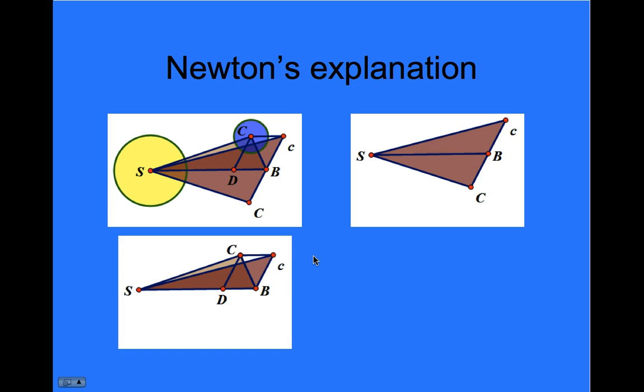But look what happens after the pull. Because of the pull, the planet does not go from B to lowercase c, but from B to capital C. Now, the reason these two things have the same area is because they have the same base, literally SB is the base, but they also have the same height because lowercase b is parallel to DC, and the parallel lines are sort of equidistant in that way. So these triangles have the same base and also the same height. And that's a nice little proof that equal distances happen in equal time, for equal time gives equal area.